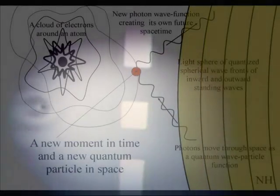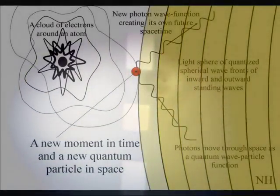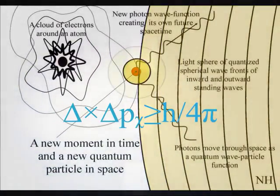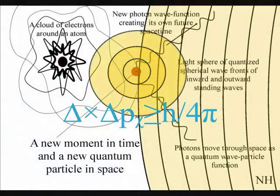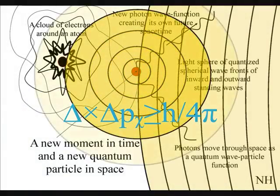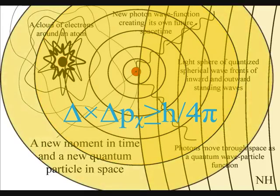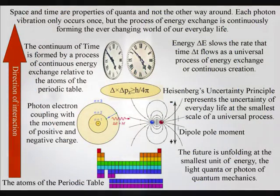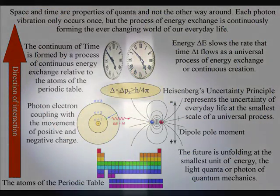We can set up experiments, and the future unfolds relative to those experiments. Therefore it is logical that if we look down into the atoms, we will see the uncertainty of everyday life unfolding at the smallest scale of the process.